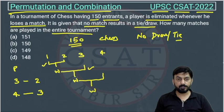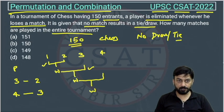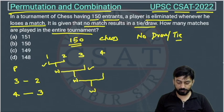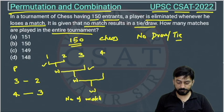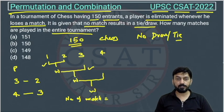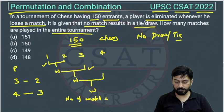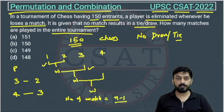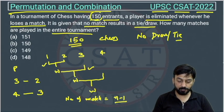Similarly, you can see the number of matches is always one less than the number of players. So if there are n players, the number of matches will be n minus 1. In the given question, there are 150 entrants.